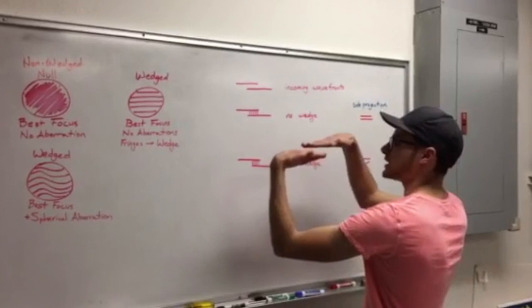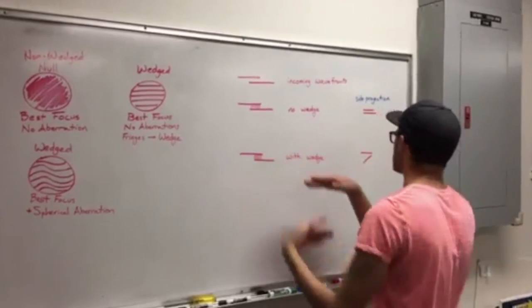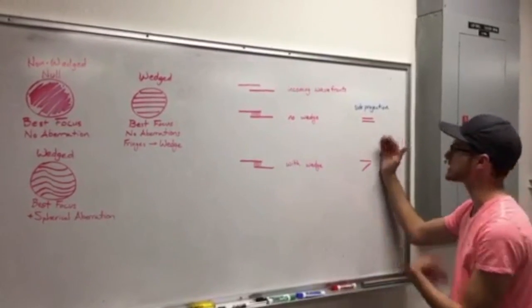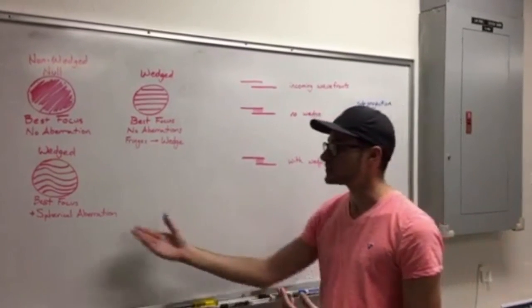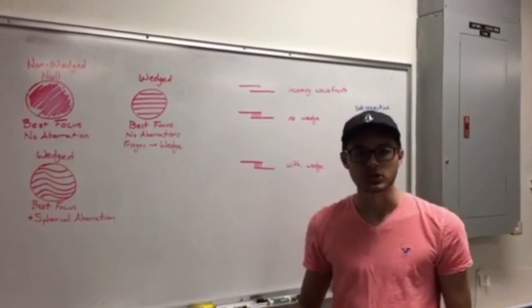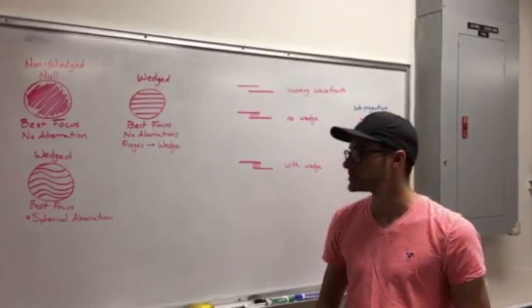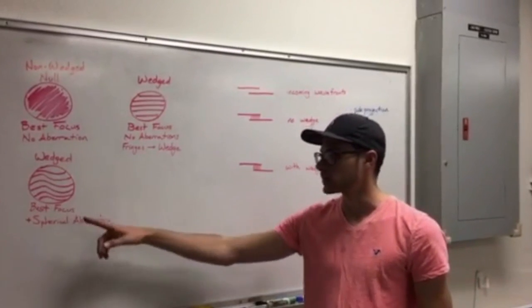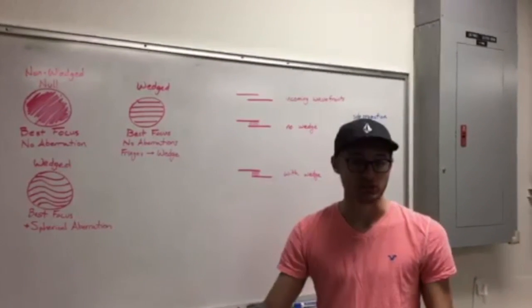However, based on that wedge angle, there's going to be a slight deviation, which you can see from a different viewpoint, or in this case, a side projection. As soon as you start to add spherical aberration or any of the other high-order aberrations into the system, you're going to start to get curved fringes indicative of which aberration it is.